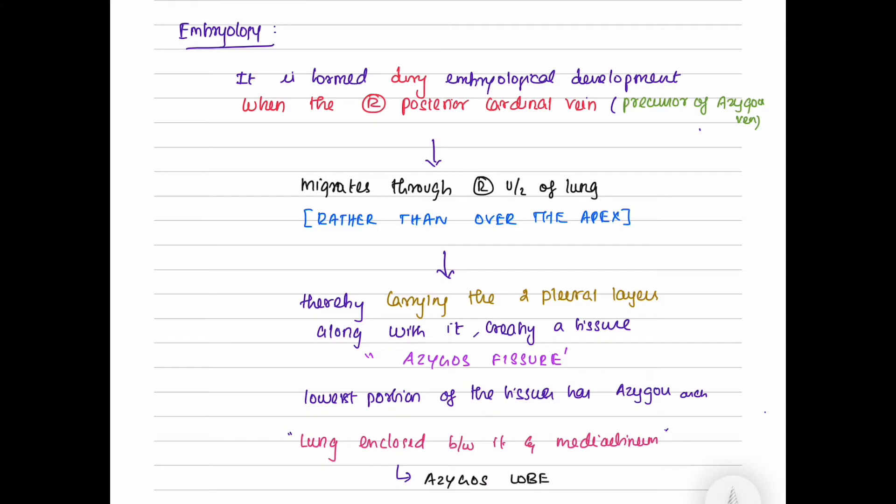It is formed during embryological development when the right posterior cardinal vein, which is a precursor of Azygos vein, migrates through the right upper zone of the lung rather than over the apex, thereby carrying the two pleural layers along with it, creating a fissure known as Azygos fissure.